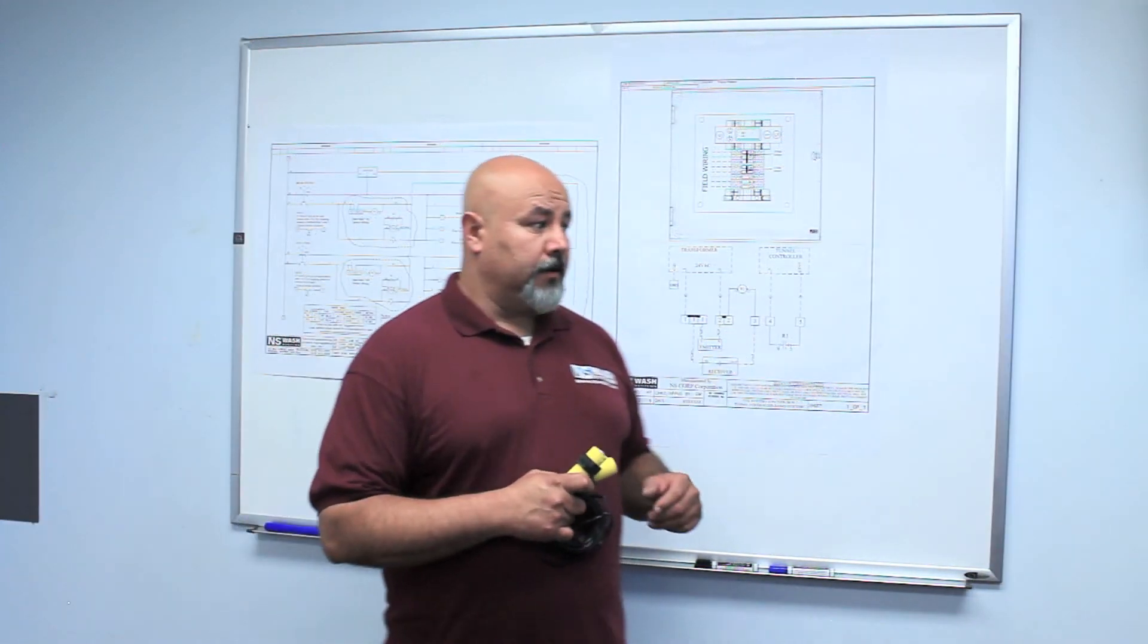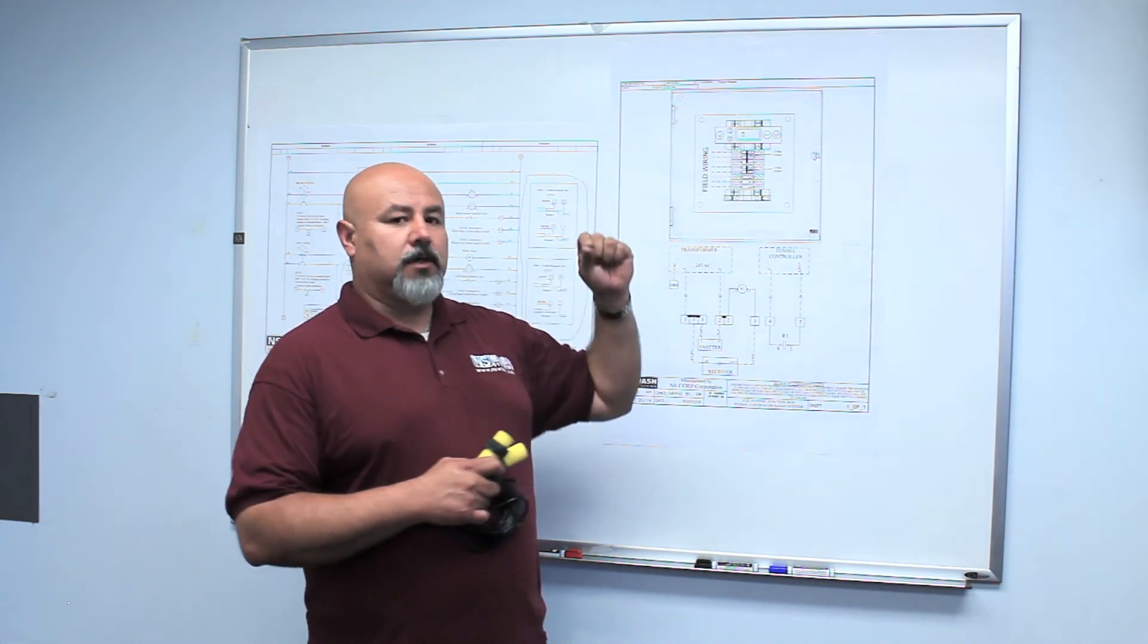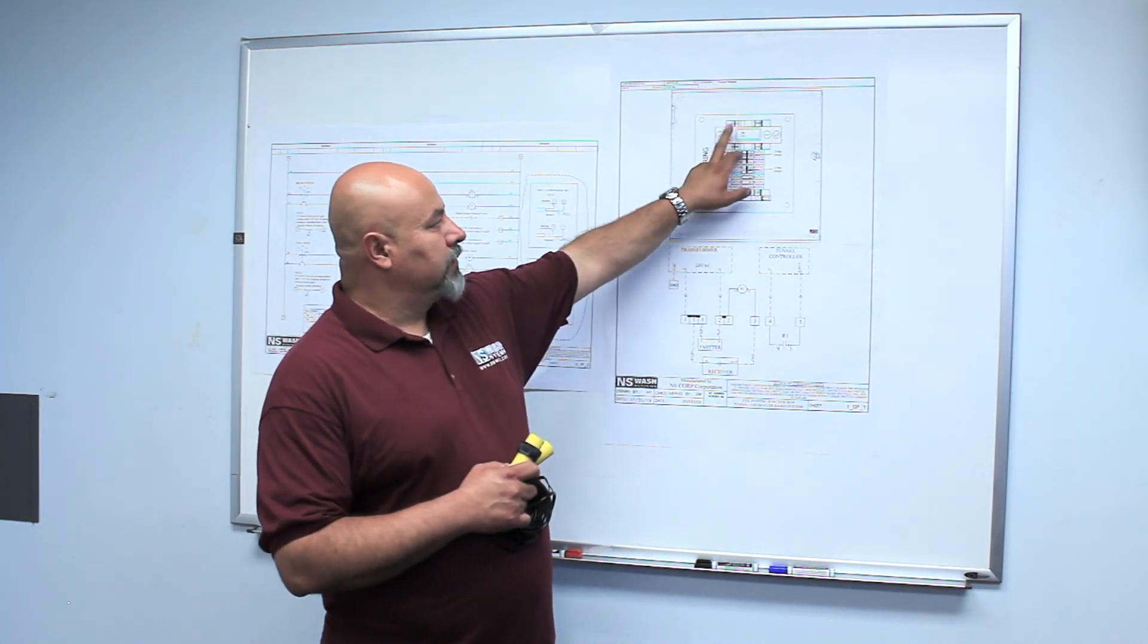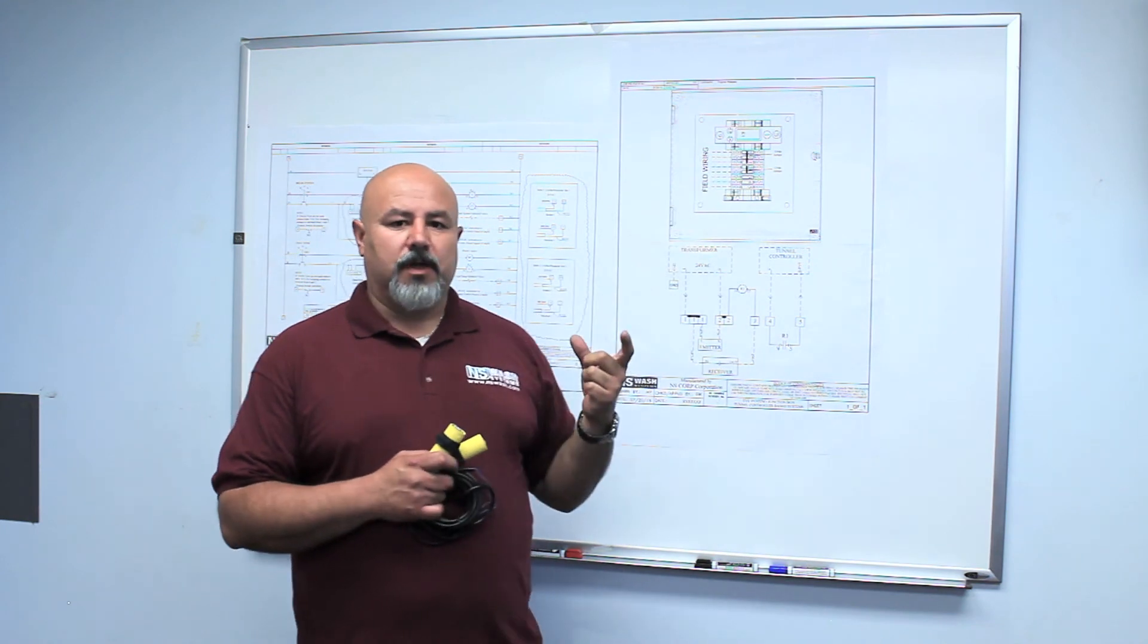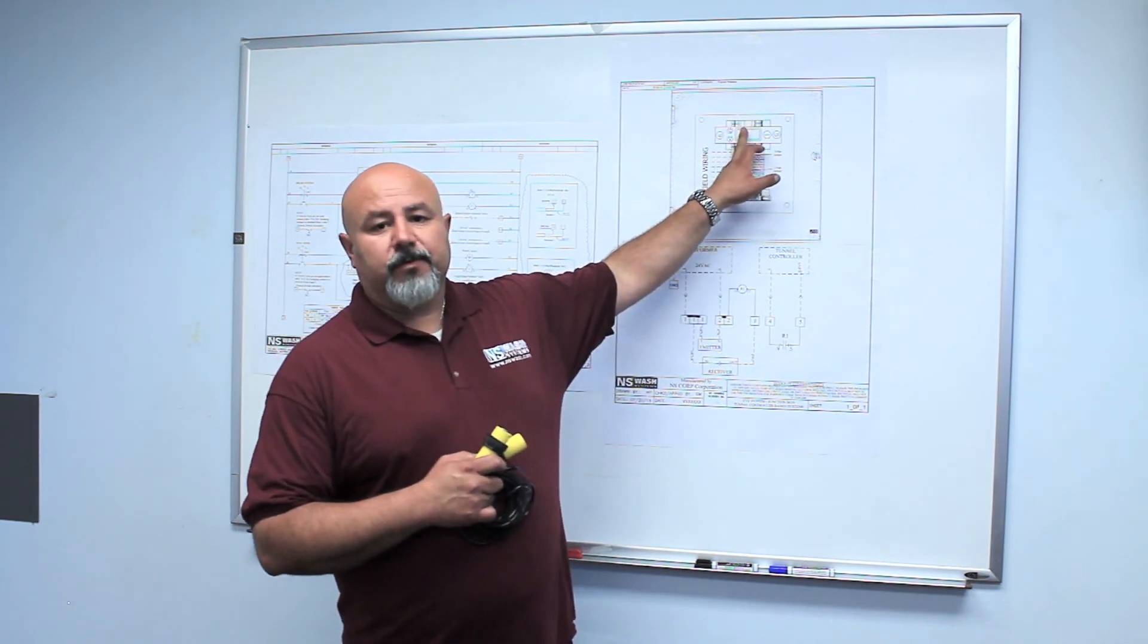The other thing for constant activation would be that in this case, the relay stuck closed. So the two terminals, they melted together, they stuck together. So that's going to be a constant activation. You'd have to replace the relay for that.